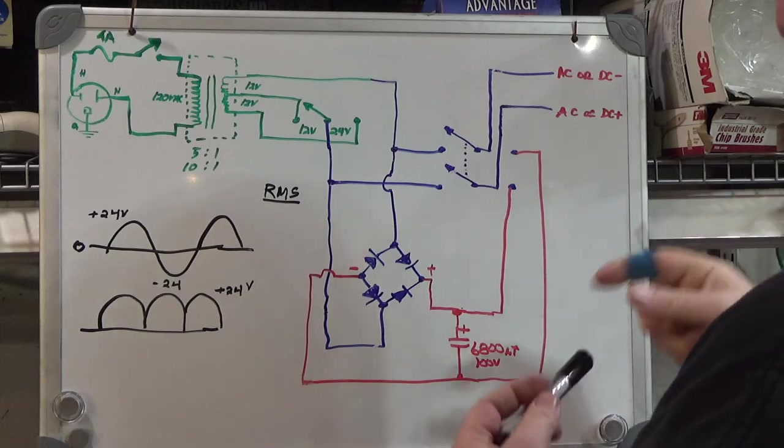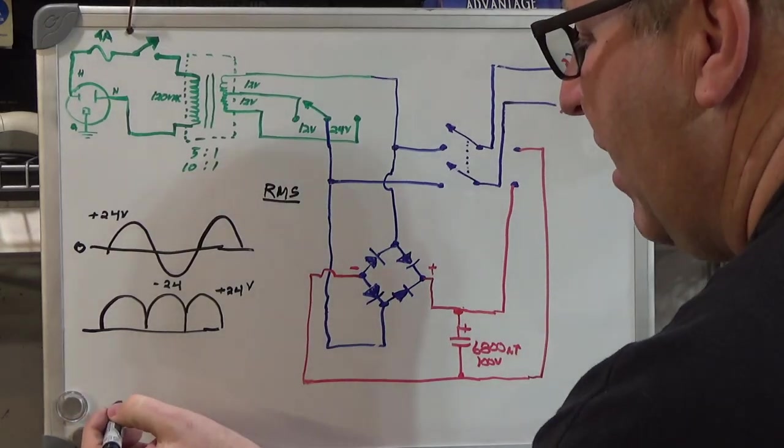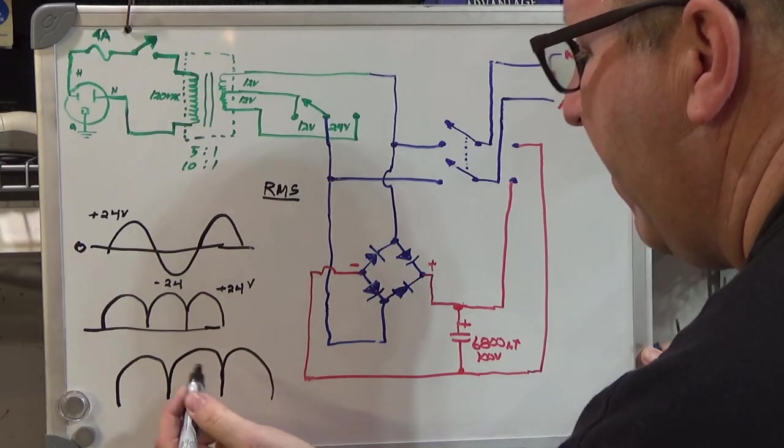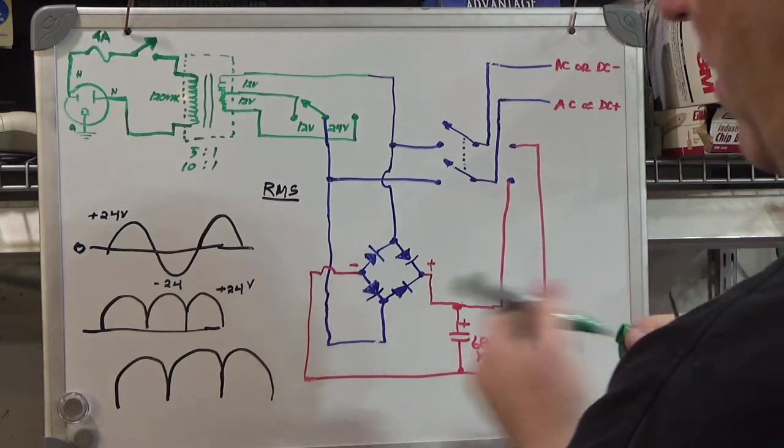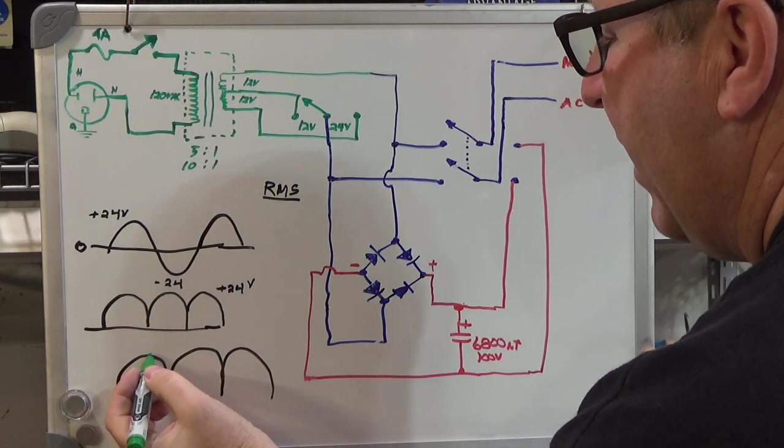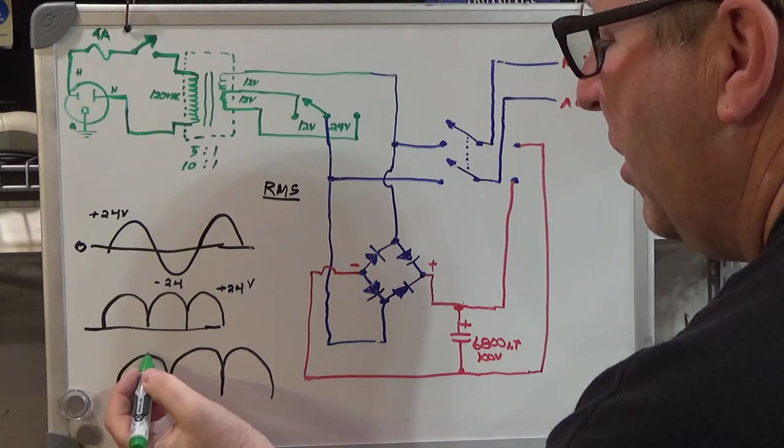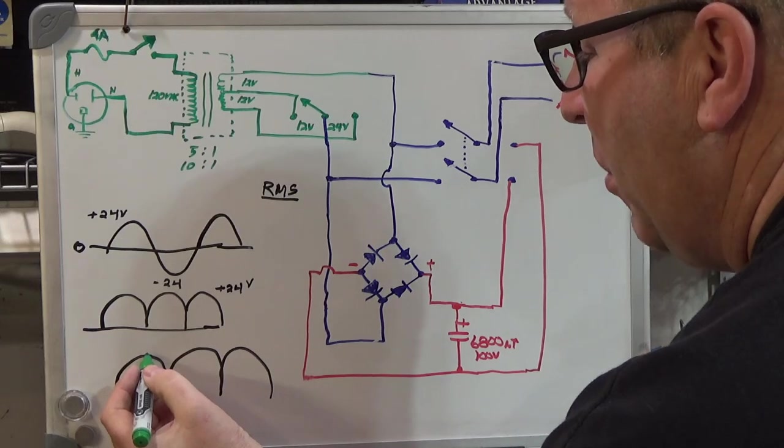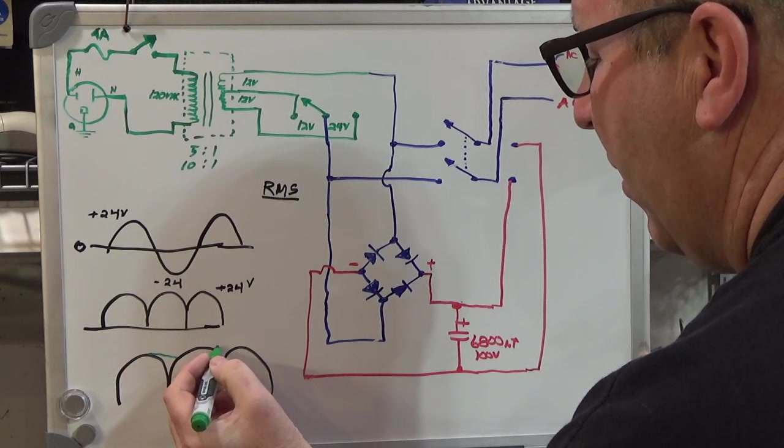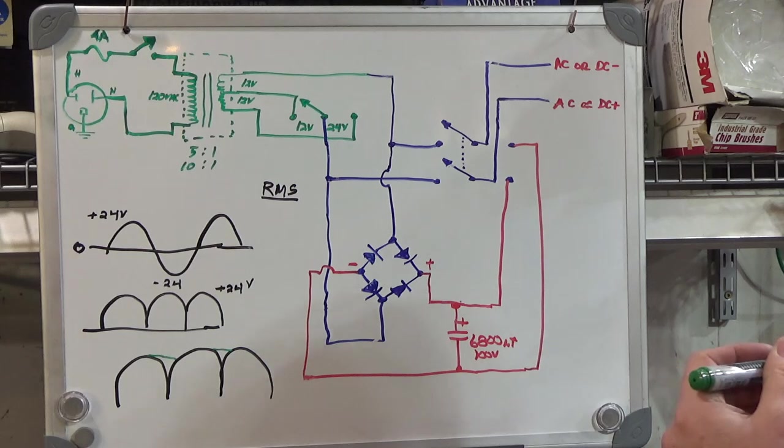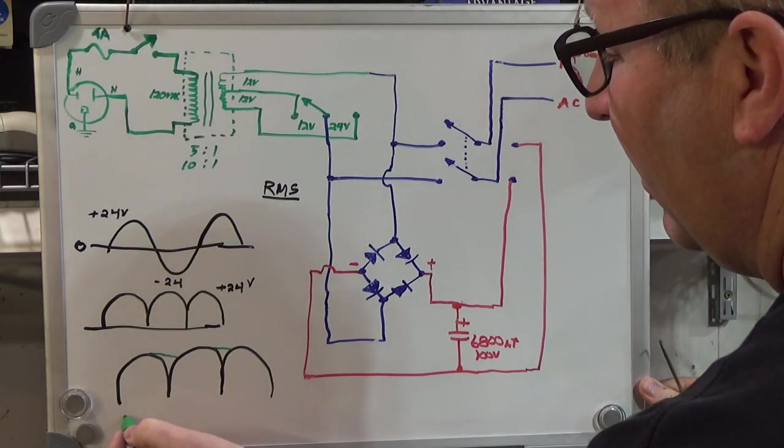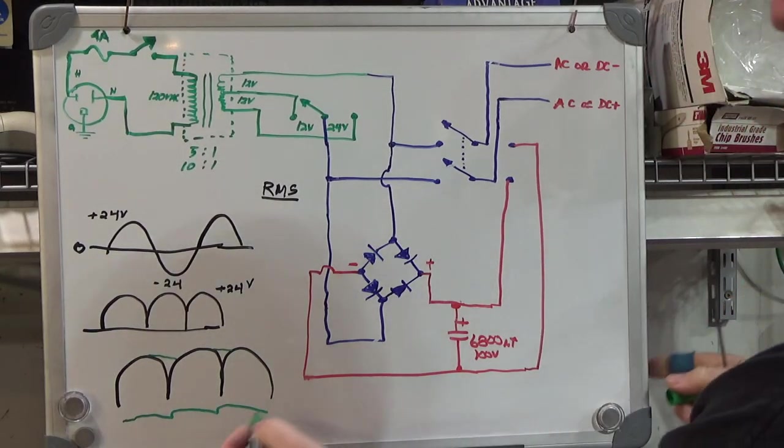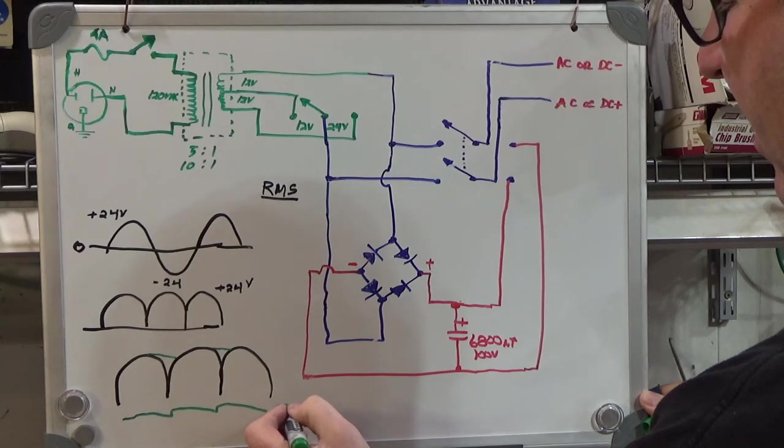What that ends up doing is as the capacitor charges up to peak and then the voltage starts to sag on the other side, the capacitor starts feeding current back into the circuit, which tends to prop the voltage up. So it looks like this. What you end up with on your output is something that looks a lot closer to a straight line DC signal on the output.